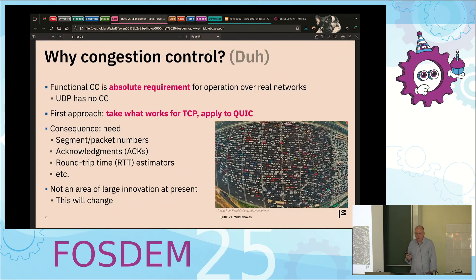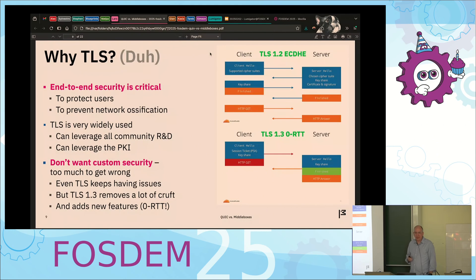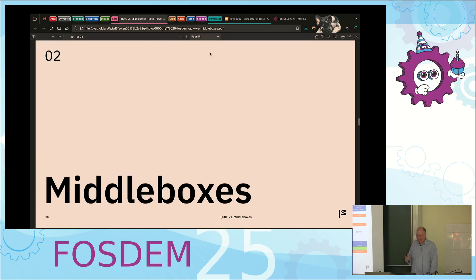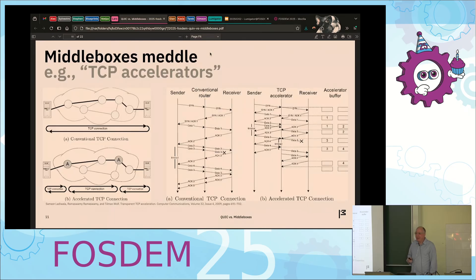Why do we need congestion control? We do — it's the internet. There's apparently a photo of a Chinese highway which shows you why congestion control matters, not only in the network. Why do we want TLS? Everybody knows building your own crypto is bad, so we want to use TLS.